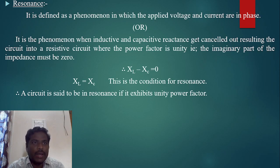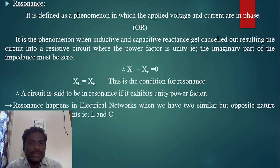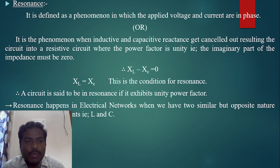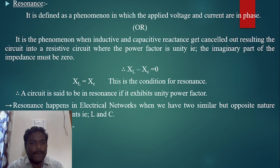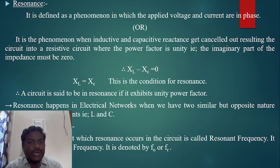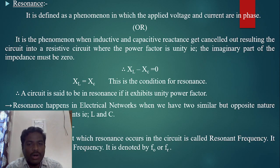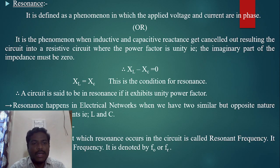Resonance happens in electrical networks when we have two similar but opposite-nature energy-storing elements — L (inductance) and C (capacitance). Both are energy-storing elements but of opposite nature. The frequency at which resonance occurs in the circuit is called the resonant frequency, also called the natural frequency. It is denoted by f₀ or fᵣ.